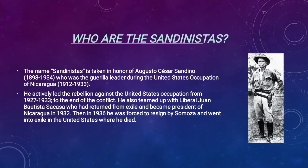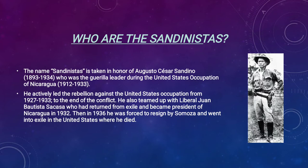Sandino was able to lead the rebellion and see the end of the conflict with the United States leaving Nicaragua. He also teamed up during this time with liberal Juan Bautista Sacasa, who had returned from exile and became president of Nicaragua in 1932. Unfortunately, in 1936, Sacasa was forced to resign by Somoza — the family that became dictators — and was basically forced into exile again to the United States, where he died.